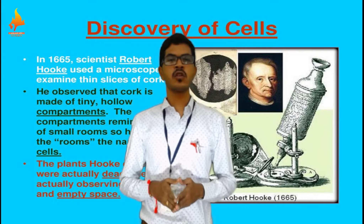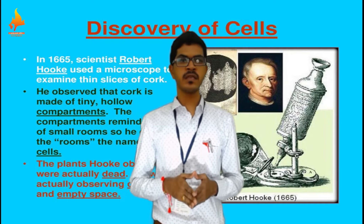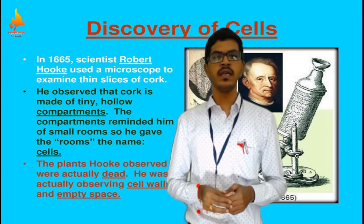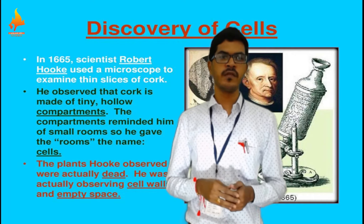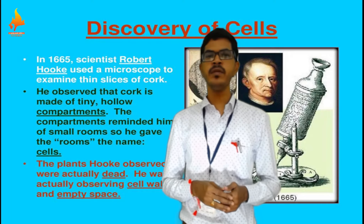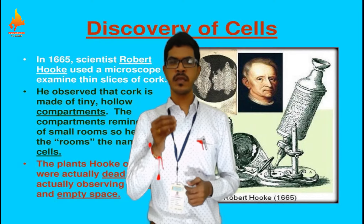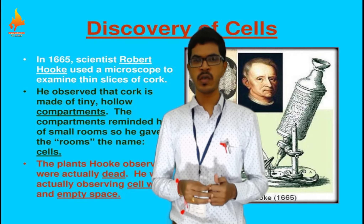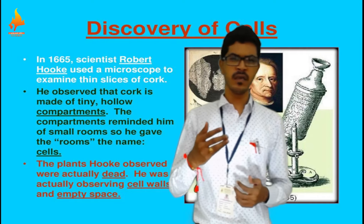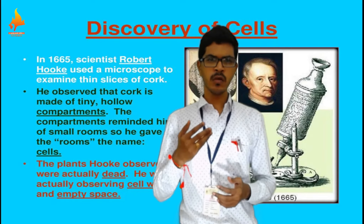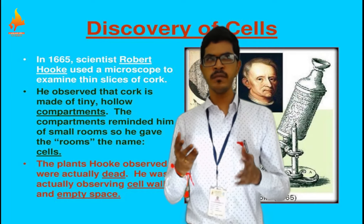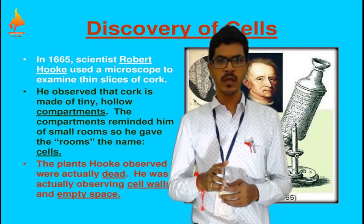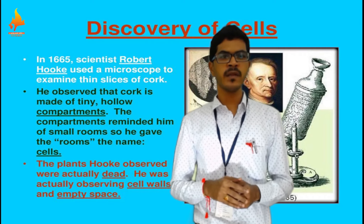The person is Robert Hooke. In the year 1665, he was the first person who used a microscope and observed the cells for the first time. He observed the cells of a cork, of a dead plant tissue. When he observed them, they looked like small compartments, small rooms, and he named them as cell.